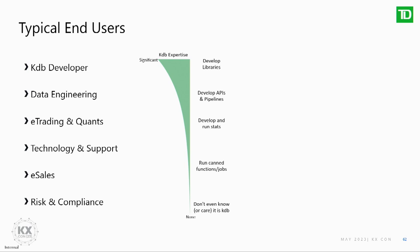Below data engineering we have our e-trading team and our quant team, similarly technology and support looking at performance. We also have our e-sales team — one thing we've really noticed is our sales team has become much more data-driven as we've exposed clean, intuitive, easy-to-use data to them. They really use that to optimize the business and make sure we're spending dollars where we're actually generating revenue. Finally there's risk and compliance. With KDB, it's a very steep knowledge curve — KDB developers know a ton, data engineers know a little bit, developing APIs and pipelines, and from there down they're largely running canned stuff.